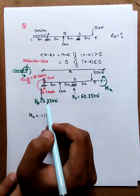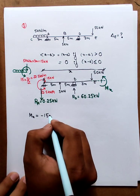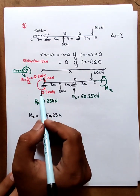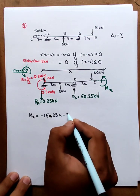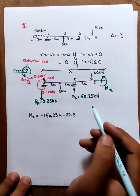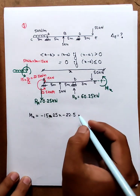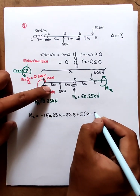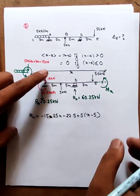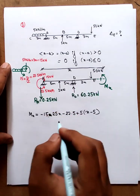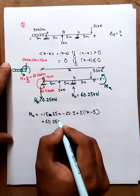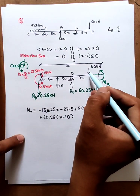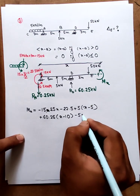If we have 15 and 0.25, we have to add 15.25x, which is 15 plus 0.25x. This is anti-clockwise. If we have 22.5x, we have an anti-clockwise moment, so we add minus 22.5x. If we have 5 kN force going clockwise, we add plus 5 into x minus 5. We also add x minus 10. Then we add 50 kN force, which is anti-clockwise, so we add minus 50 into x minus 13.